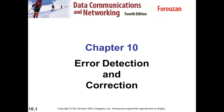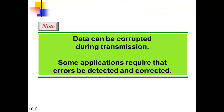Data can be corrupted during transmission — that is what happens most of the time. When you send data over a physical medium, during the transmission stage there are many reasons: interference and many other things can introduce errors. Some applications require that errors be detected and corrected. For multimedia applications, even if a little bit of error is introduced, it doesn't make much difference. But for applications where even a single bit makes a difference, error detection and correction must be taken very seriously.